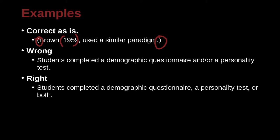Students completed a demographic questionnaire and/or a personality test. And/or. So that sounds like they did the questionnaire, and they could have done the questionnaire and the personality test, or they did the questionnaire or personality test. Students completed a demographic questionnaire, comma, a personality test, or both. And this meaning is a little bit different. So here the students completed a demographic questionnaire. That is one thing they did. They also did a personality test, or they did both. So it's a different meaning. Be careful with this and/or slash.